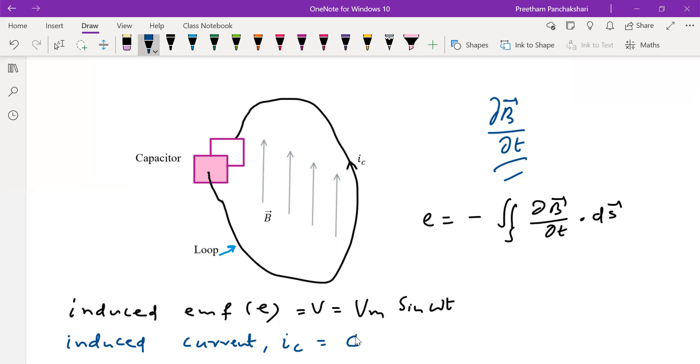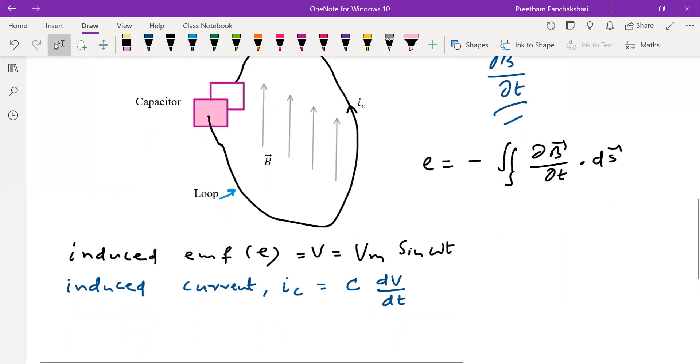And it is given by capacitance C into dV by dt. This equation is very familiar in our circuit theory where C is the capacitance of the parallel plate capacitor which is given by epsilon, the permittivity between the two plates, times A divided by d. A is the plate area. d is the distance of separation between the two plates.